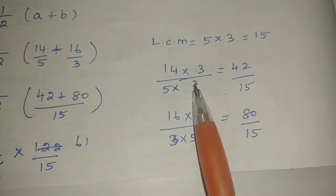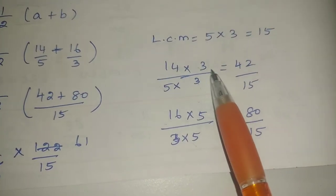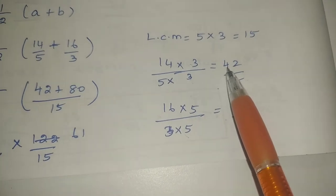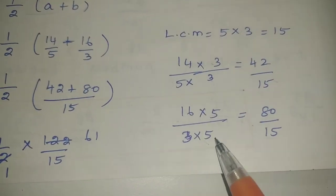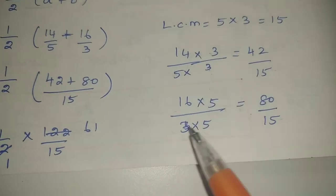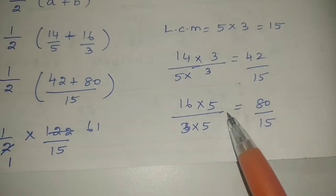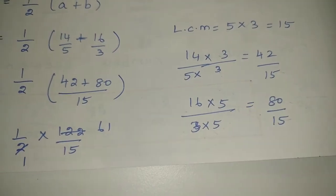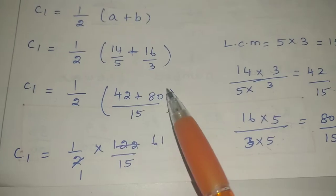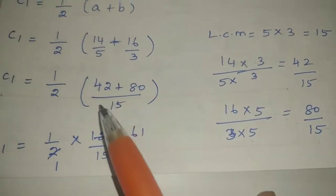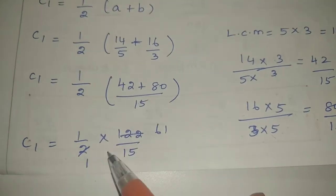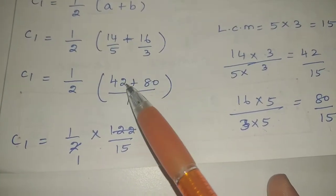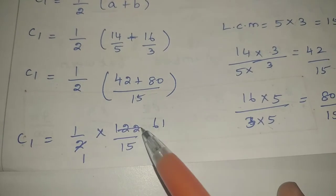The LCM is 15. For 14 by 5: 15 over 5 is 3, so numerator 14 times 3 is 42. Balance: 1 times 3 is 3, so 42 by 15. For 16 by 3: 15 over 3 is 5, so numerator 16 times 5 is 80. So 80 by 15. Now add the two values: denominator is the same. 42 plus 80: 2 plus 0 is 2, 8 plus 4 is 12. So 122 by 15.